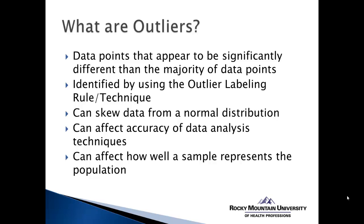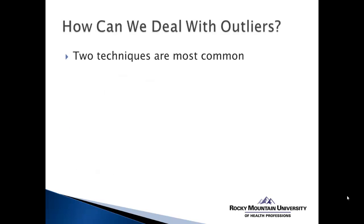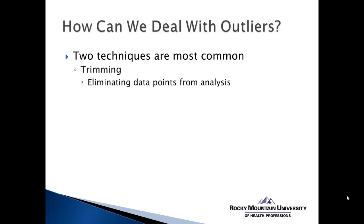So we've talked about what outliers are, why they're important, and why we need to identify them. Now let's talk about some of the different techniques we have for dealing with them. There are two techniques that are considered the most common, used in two different kinds of situations. The first technique is called trimming, where we basically eliminate data points from the analysis based upon several possibilities.